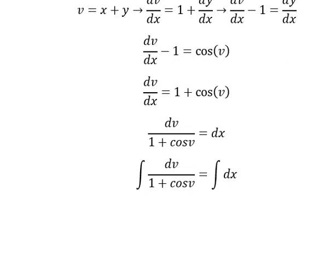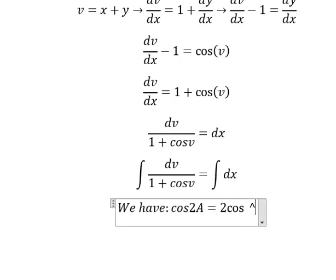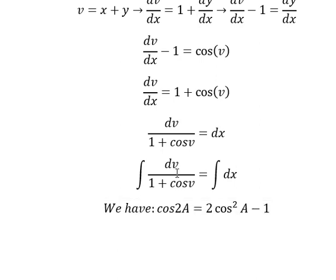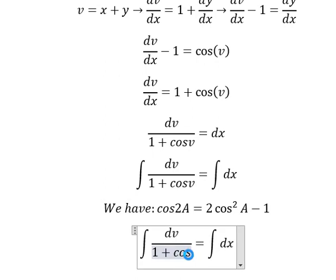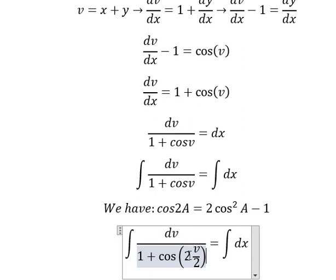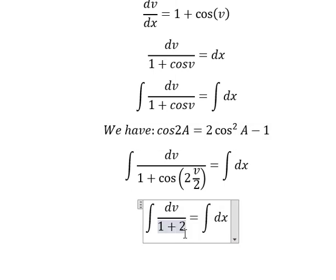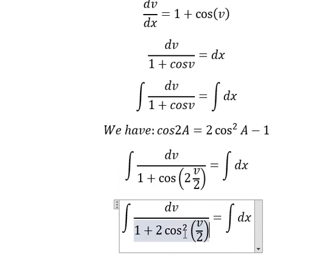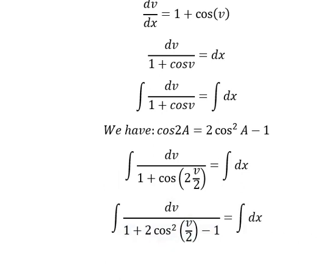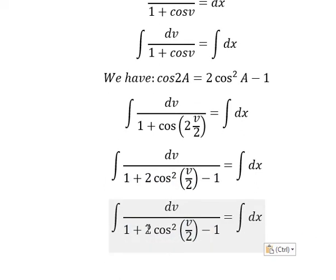Next we have the formula: cosine 2A equals to 2 cosine squared A minus 1. So if we look carefully about cosine V, that is about number 2 multiplied by V over 2. This one we change by this one. You got about 2 cosine V over 2 squared minus 1. 1 minus 1 we cancel.